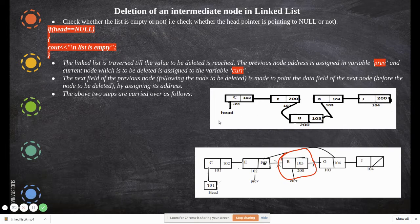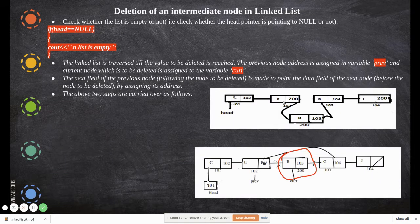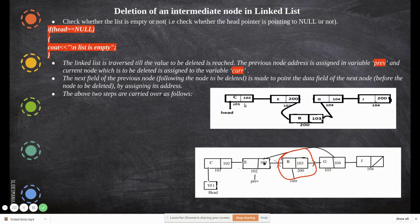Other than that, you keep three pointers of the same type: current, previous, and del_node — all of type node. We keep them because previous and current are both initially made to point to the first node, then we move the current node to the next one.